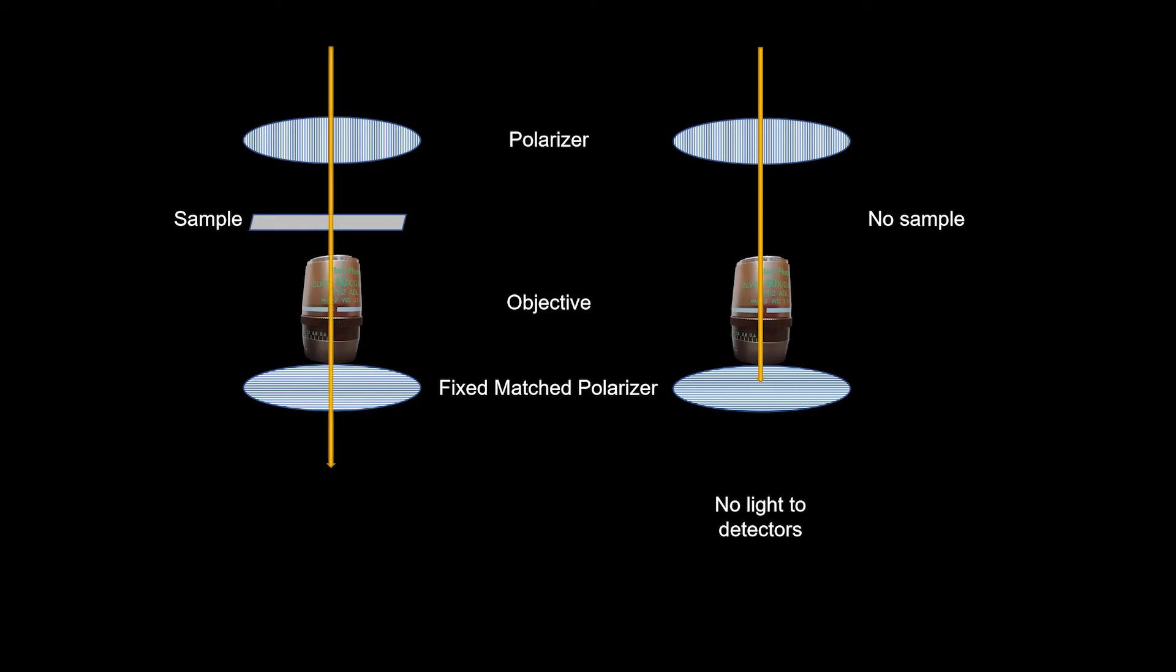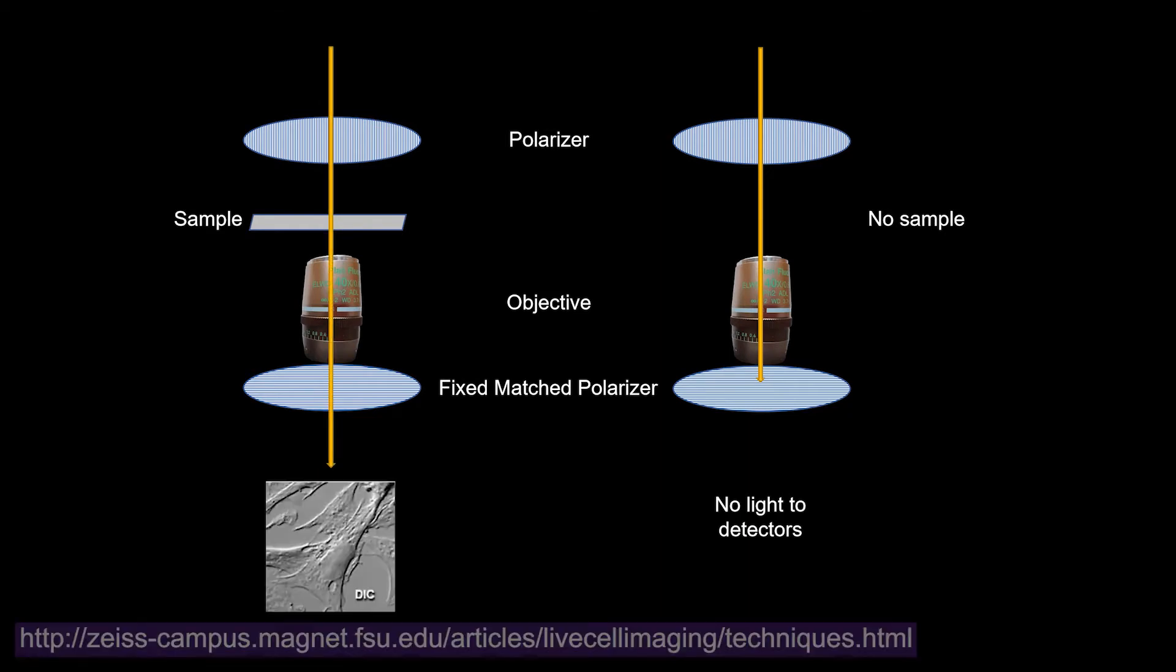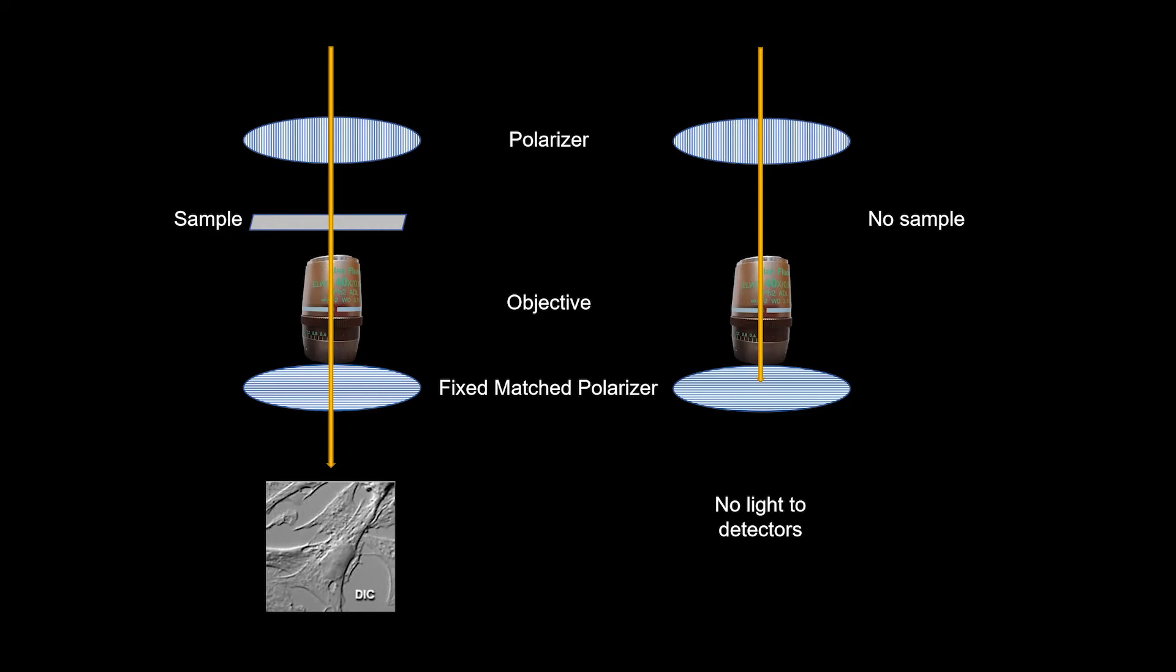Then when you put your sample in the light path, it will shear the light and because of this mismatch, some of the light will leak through to the detector to produce contrast.